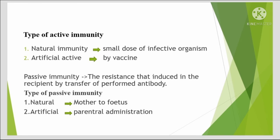The mechanisms of active immunity include: first, humoral or antibody-mediated immunity; second, cell-mediated immunity. Types of active immunity: natural — from a small dose of infective organism; and artificial active — by vaccine. Passive immunity is the resistance induced in the recipient by transfer of a preformed antibody. Types of passive immunity: natural — mother to fetus; and artificial — parenteral administration.